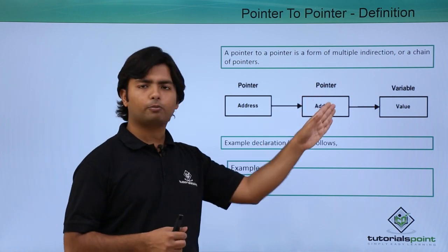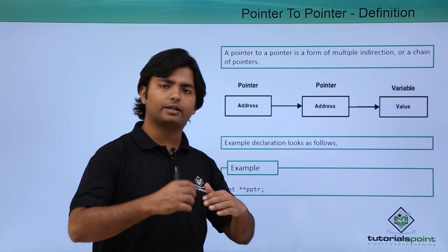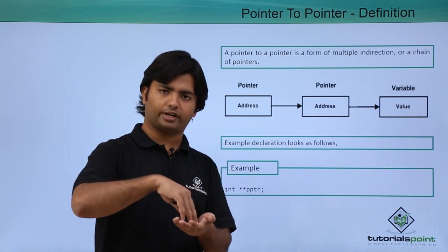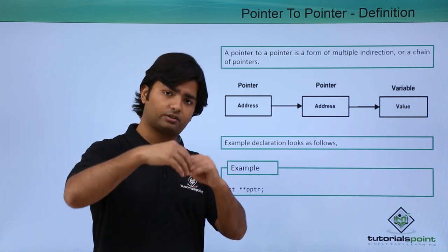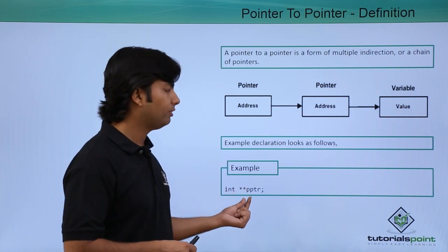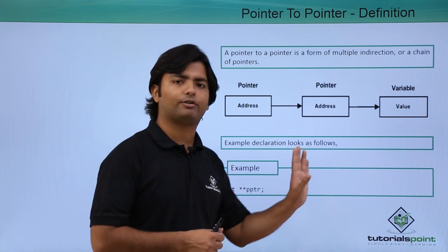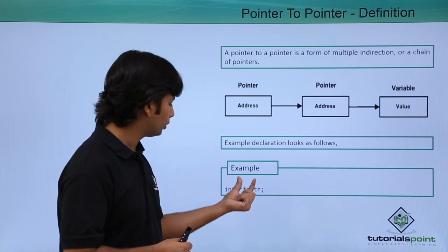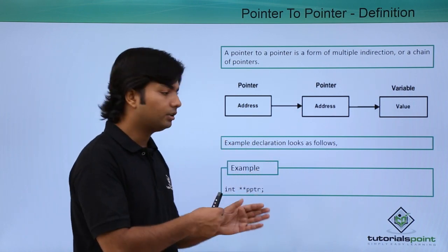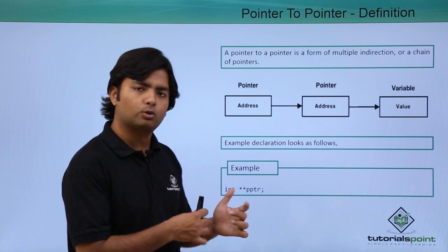When we define a normal pointer we use a single asterisk symbol, but here we are making a hierarchy. There is a variable, a pointer storing its address, and another pointer storing this pointer's address. So it's a multi-level thing. For that we will use double asterisk. If I want to store the address of another pointer, I will define a pointer to pointer with three asterisks, and so on — it can go to any level.